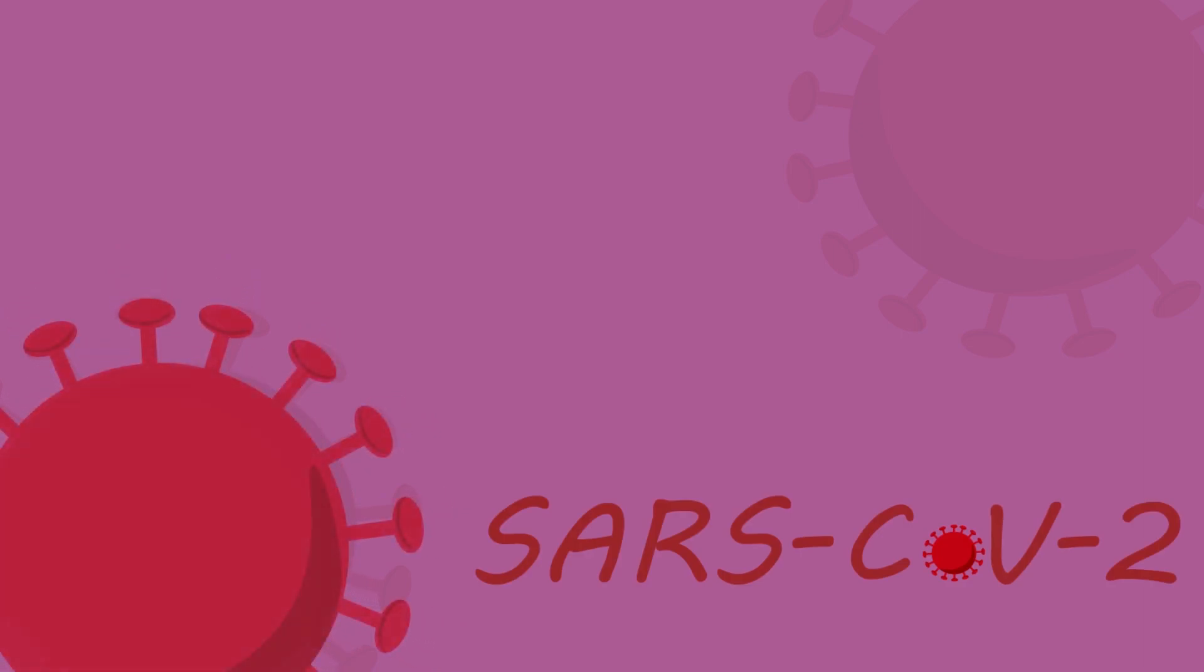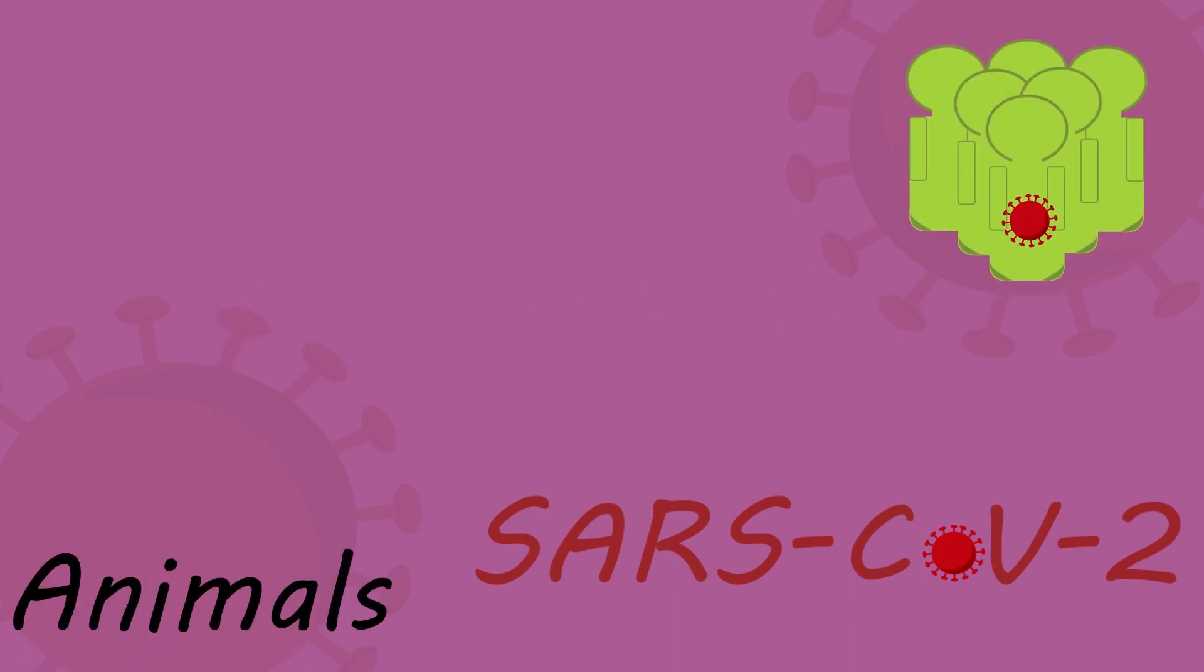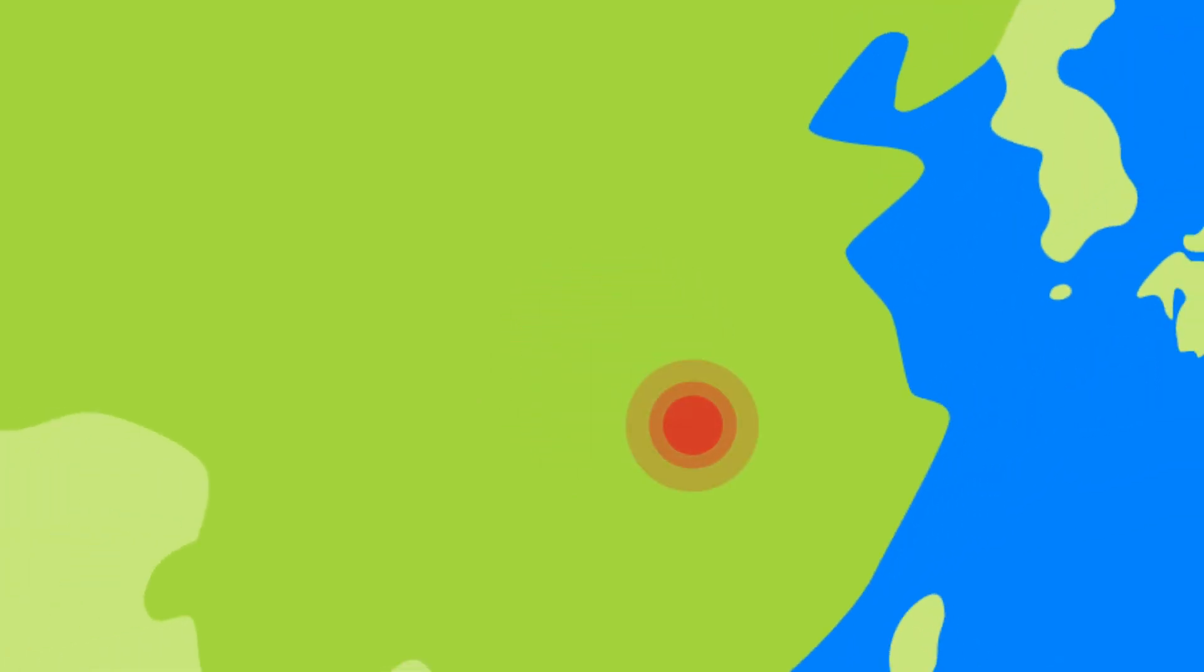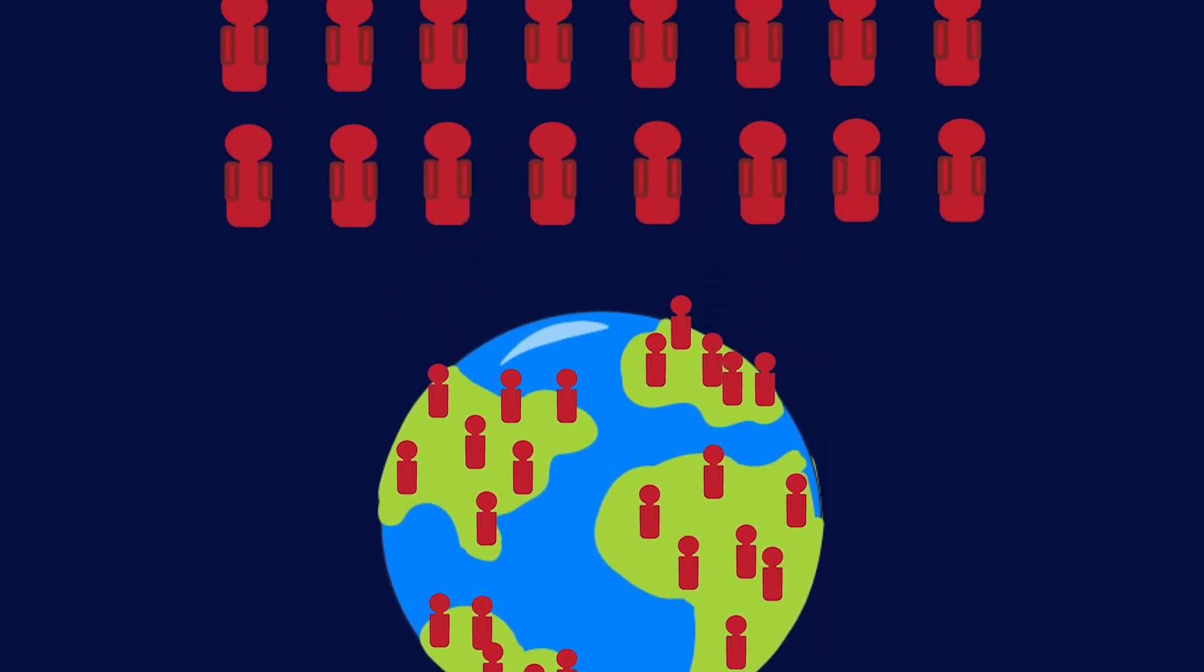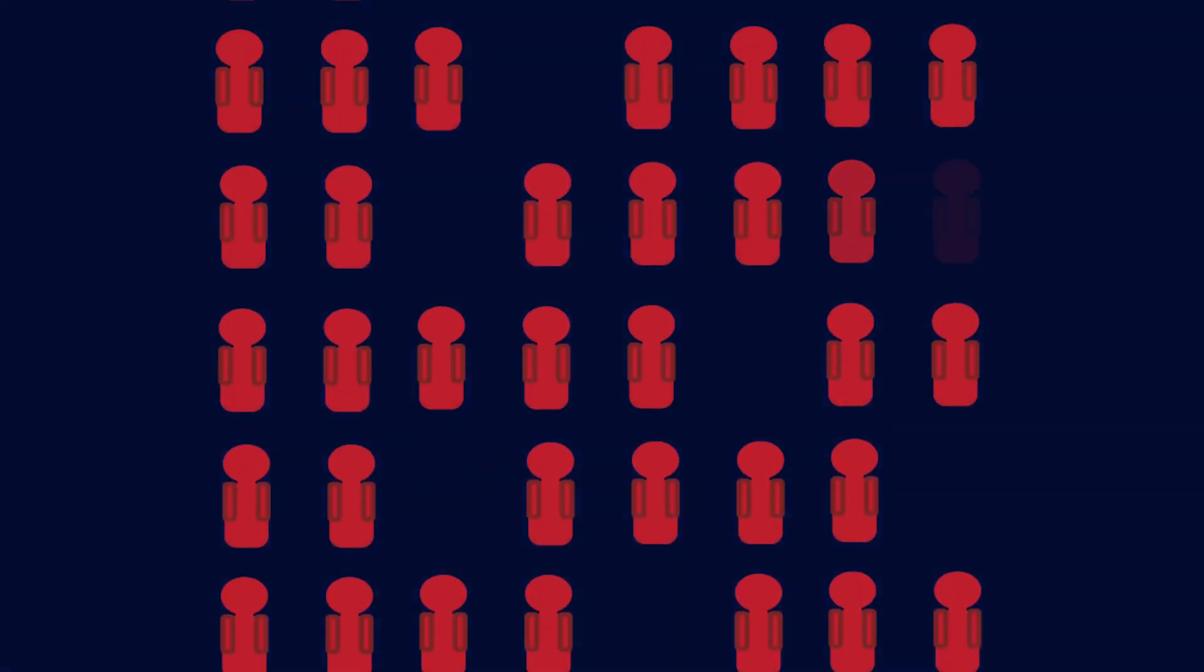This virus is thought to be zoonotic, meaning it was first transmitted from animals to humans. The first outbreak was recorded in Wuhan, China in December of 2019, and the virus quickly spread across the globe, infecting over 20 million people and killing over 820,000 as of August 2020.